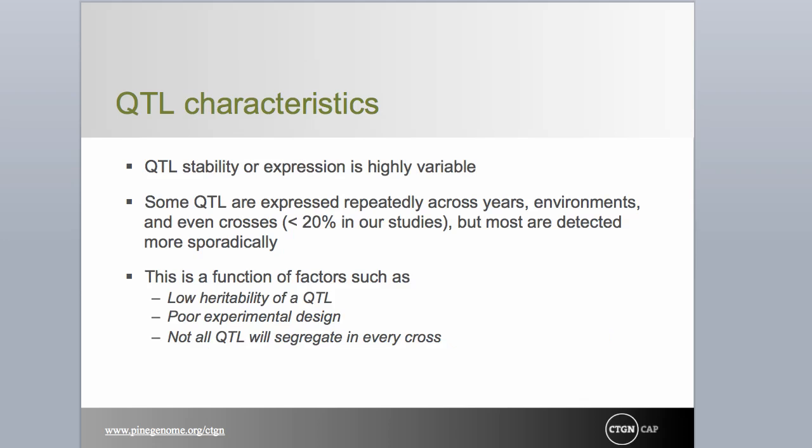Though dozens of QTL studies have been conducted in trees, only a handful have ever attempted to verify QTL in time, space, or genetic background. For those few studies that have looked at verification, a highly variable pattern of QTL stability and expression is observed. The results are at the same time encouraging and disheartening, particularly for the applied tree breeder.